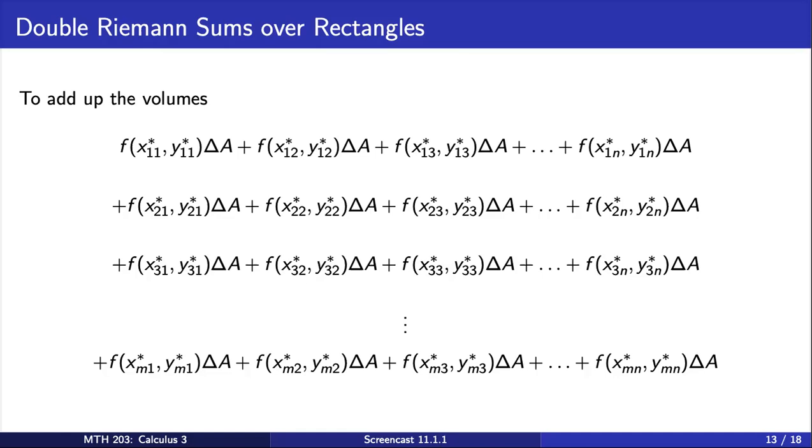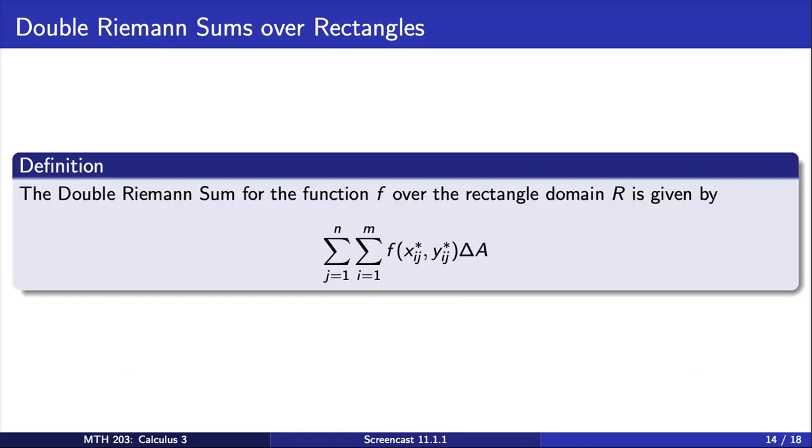There are a lot of terms in this sum. This large sum that we're looking at is called the double Riemann sum for the function f over the rectangular domain R, and can be written more succinctly using two summations, as we have here.